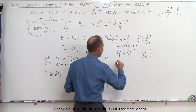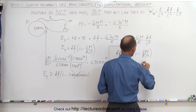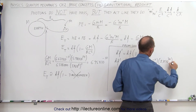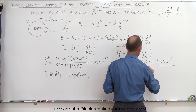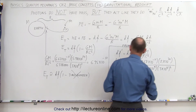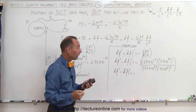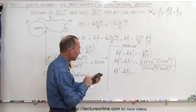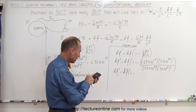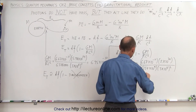Let's see how much the energy has changed. hf prime equals hf times (1 minus 6.67 × 10⁻¹¹ times the mass of the sun, divided by 150 billion meters — the distance from the sun — times (3 × 10⁸)² ). Computing that: 6.67 × 10⁻¹¹ times 2 × 10³⁰, divided by 1.50 × 10¹¹, divided by (3 × 10⁸)² equals 9.88 × 10⁻⁹.